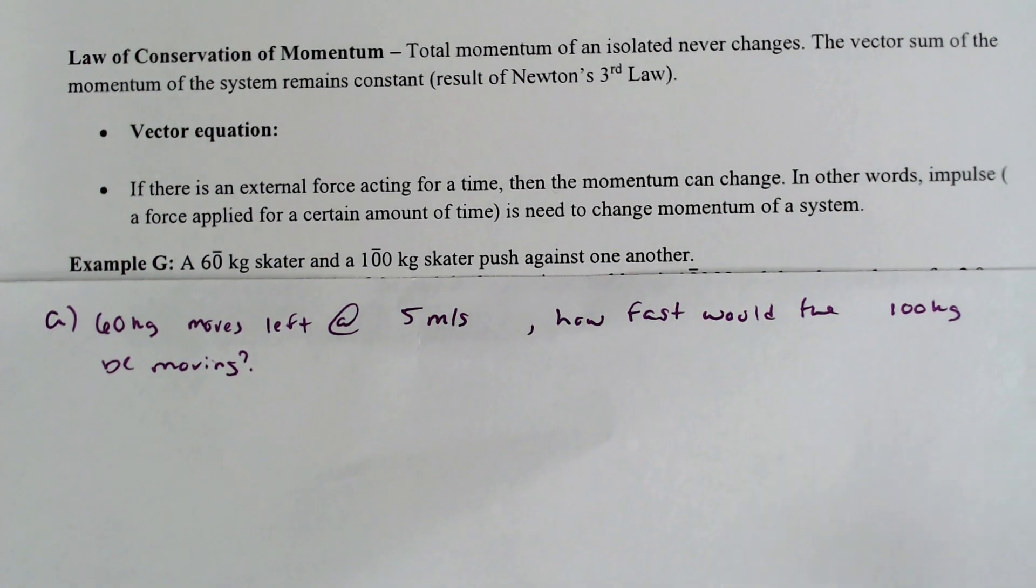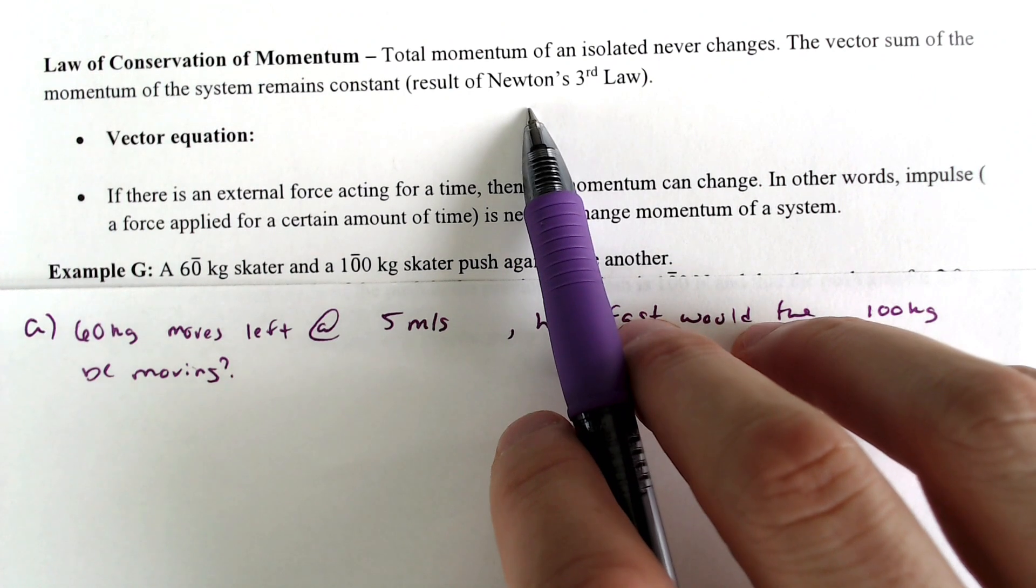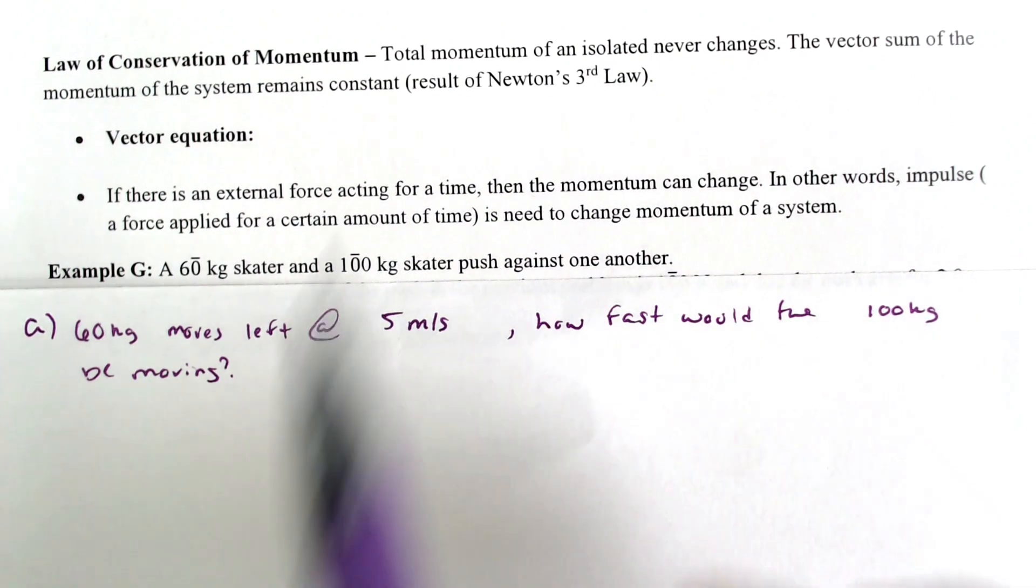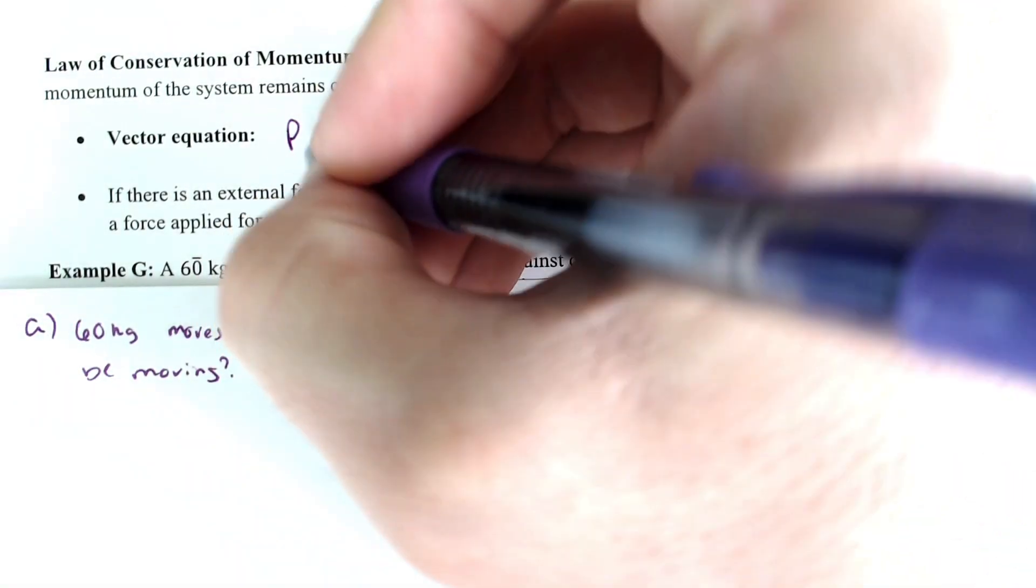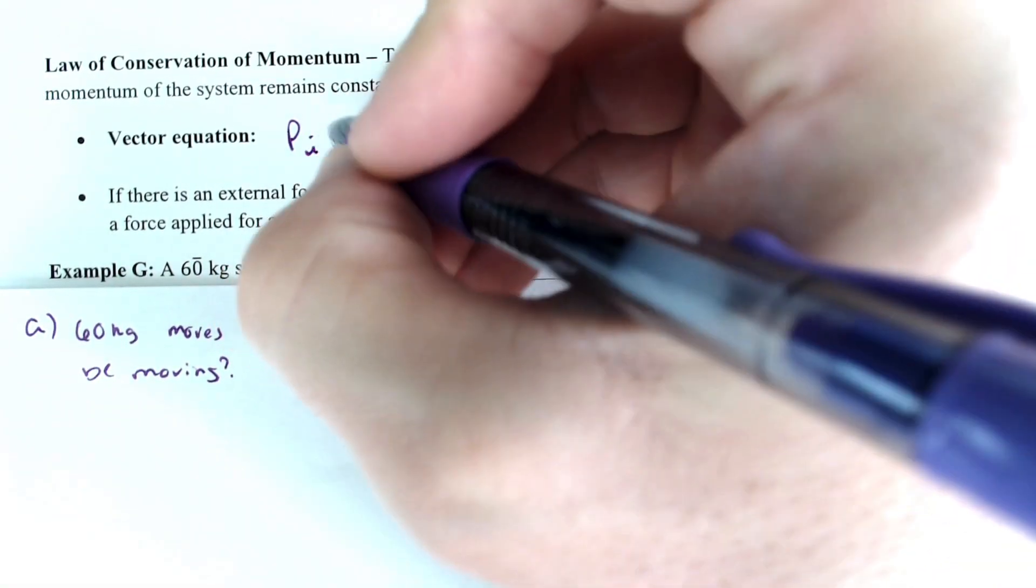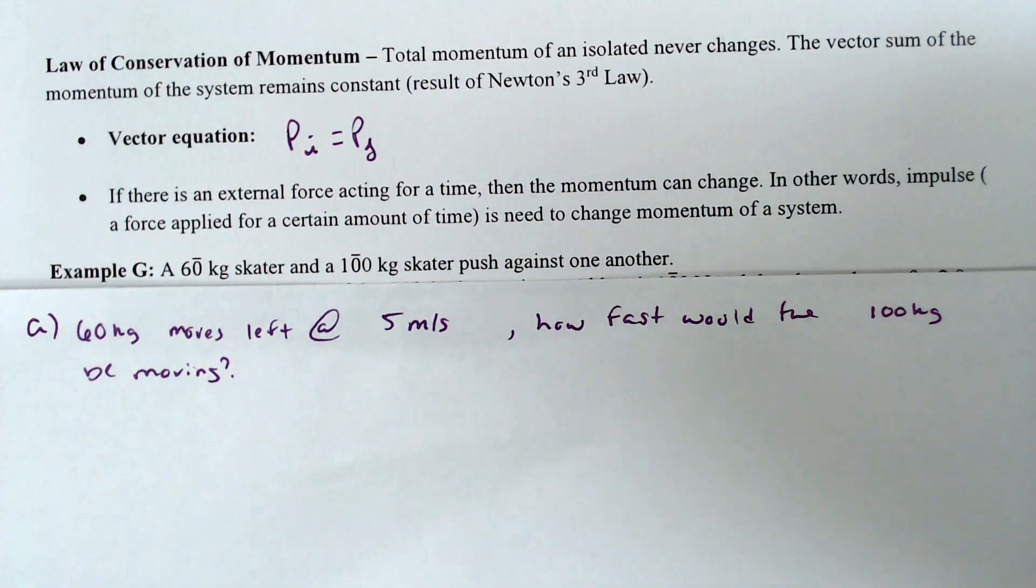So essentially, the law of conservation of momentum is like Newton's third law - that things tend to not like to change their movement and therefore their momentum. And that means that the initial momentum will equal the final momentum of said object.